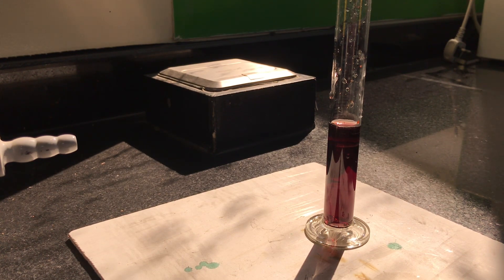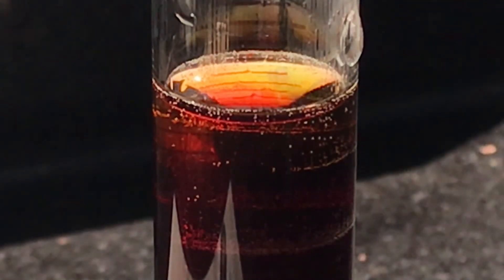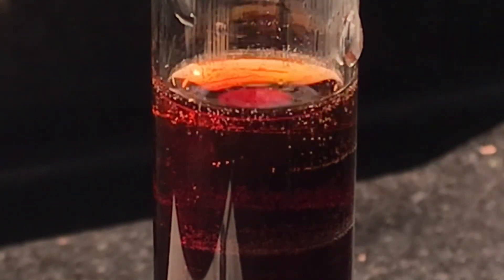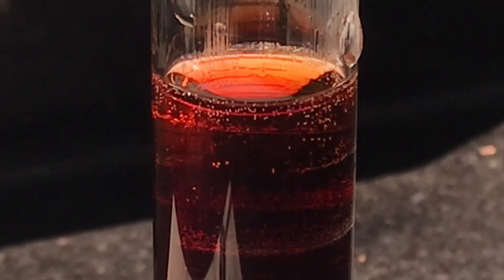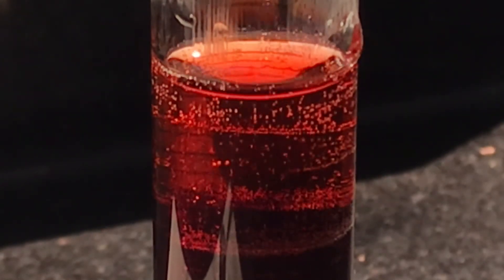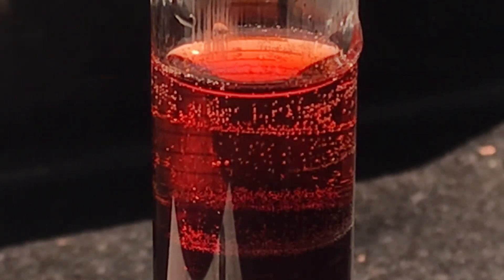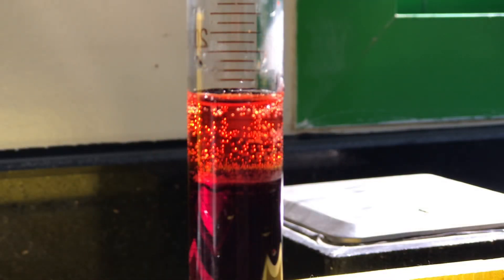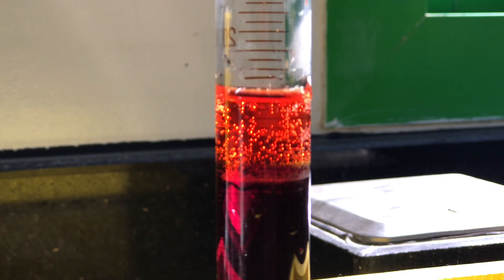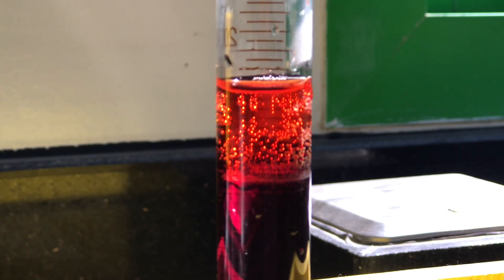What you can now do is start to add your dilute ethanoic acid. So here you can see the different colours and different layers coming through. Just adding some more of that ethanoic acid.